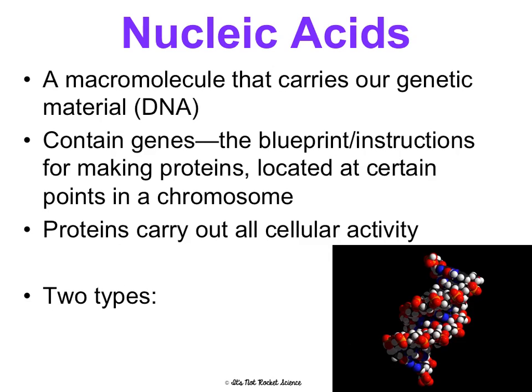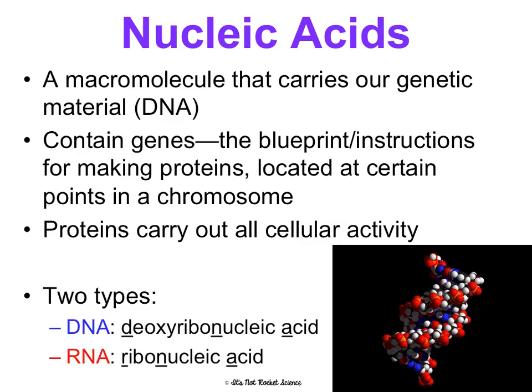There are two types of nucleic acids: DNA, which stands for deoxyribonucleic acid, and RNA, which stands for ribonucleic acid. They get their names — deoxyribo versus ribo — based on the sugar that makes them up. So DNA is made of deoxyribose, and RNA is made of ribose.